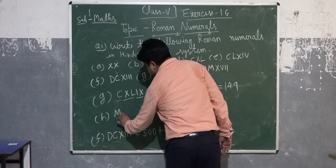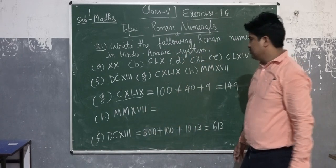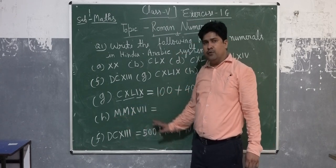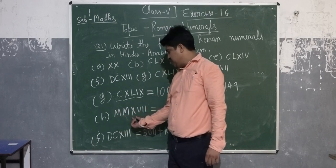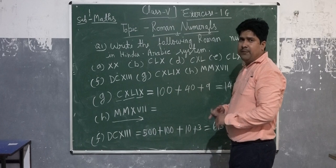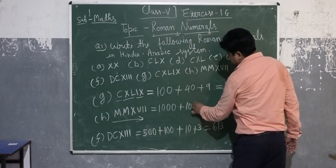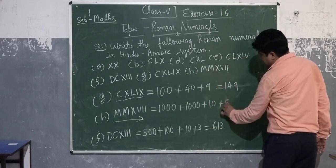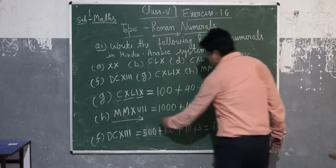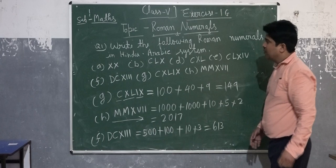We will go to H, MMXVII. We're looking, all alphabets are in decreasing order according to their values. Value of M is 1000, then after 10, 5, and 2. If we know if values are in decreasing order, we will simply add their values. So 1000 plus 1000, 10, 5, and 2. The value is 2017.